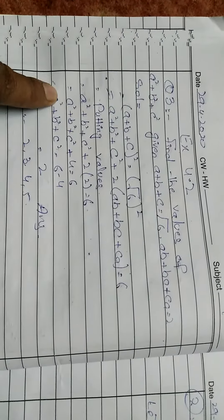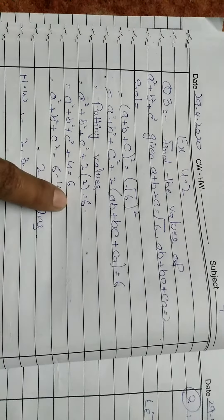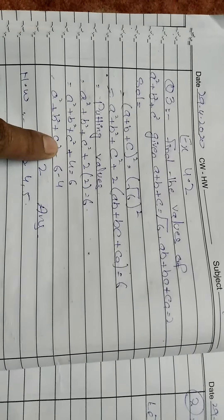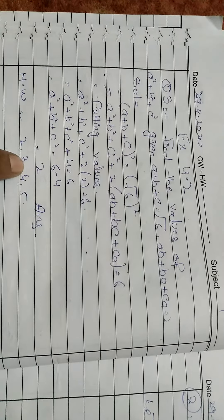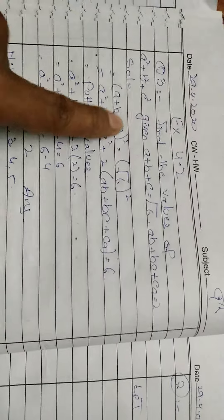This equals 6 + 2(2), which is 6 + 4 = 10. Therefore, (a + b + c)² = 10.